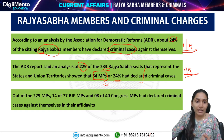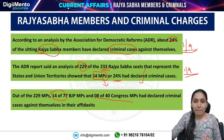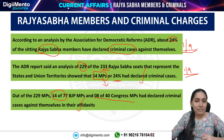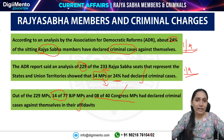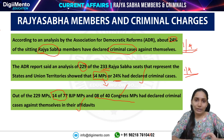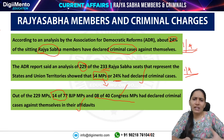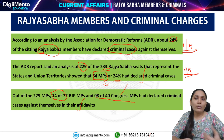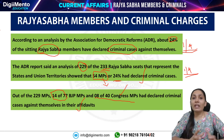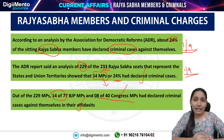Out of 229 MPs, 14 out of 77 BJP MPs and 8 out of 40 Congress MPs had declared criminal cases against themselves in their affidavits. This is the party-wise data according to research conducted by the Association for Democratic Reforms. This sums up the fact that in India there is a high rate of criminalization of politics. We say alleged criminals because until the court convicts a person, he is only an alleged person. This shows that money and muscle power has a very high range of influence in the Indian political scenario, which needs to be changed.